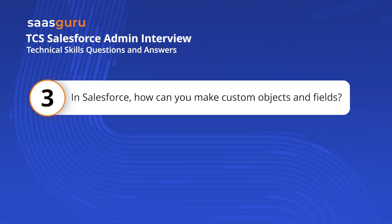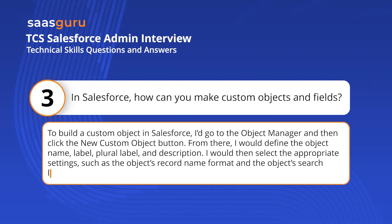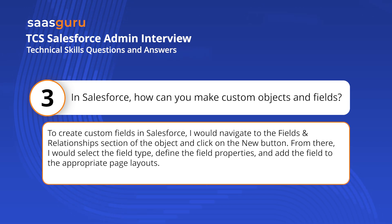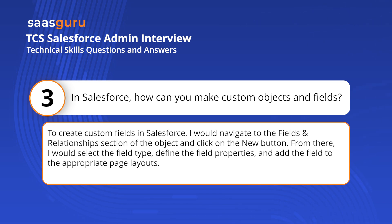In Salesforce, how can you make custom objects and fields? To build a custom object in Salesforce, I would go to the Object Manager and click the New Custom Object button. From there, I would define the object name, label, plural label, and description. To create custom fields, I would navigate to the Fields and Relationships section of the object and click the New button, then select the field type, define the field properties, and add the field to the appropriate page layouts.